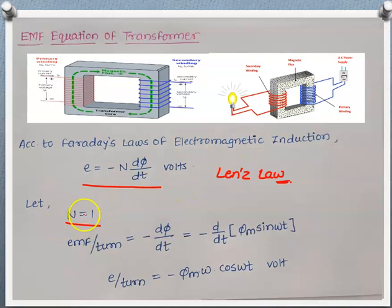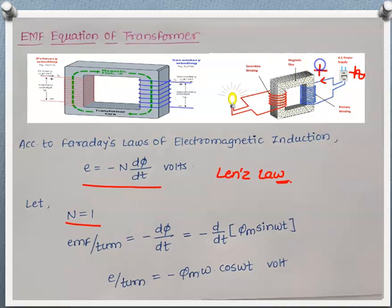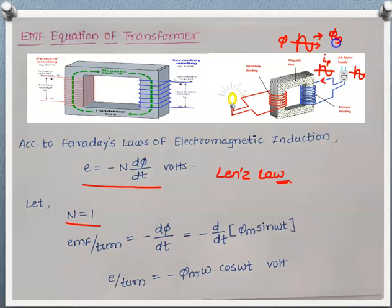Suppose N = 1, that means we have only one turn, then EMF per turn will be −dφ/dt. As we have discussed, AC supply connected to the primary produces a current ip which is alternating in nature. This ip produces flux φ, which is also alternating and sinusoidal in shape. So we can write φ = φm · sin(ωt) Weber, where φm is the maximum flux value and ω is the angular frequency.